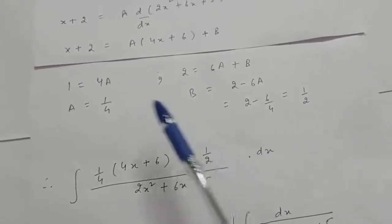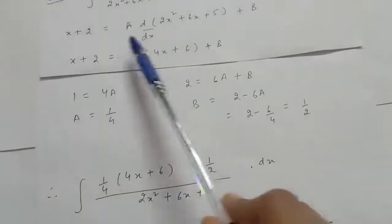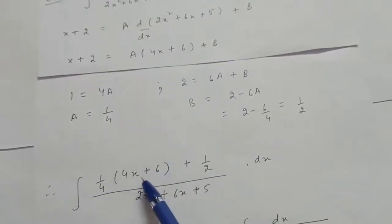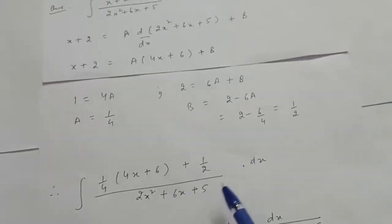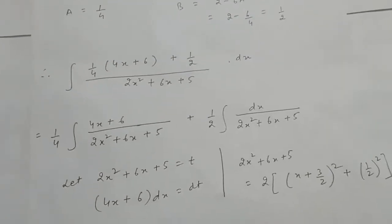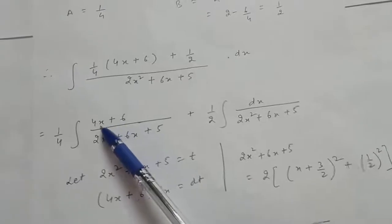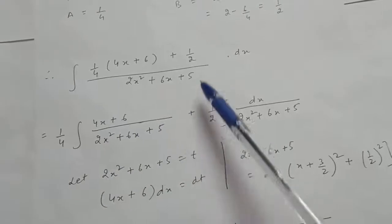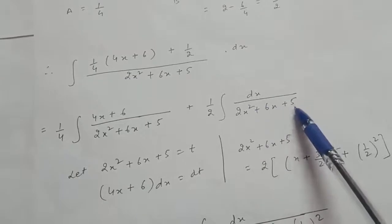With A equals 1/4 and B equals 1/2, replace x + 2 with (1/4)(4x + 6) + 1/2. The integral splits into (1/4) times integral of (4x + 6)/(2x² + 6x + 5) dx plus (1/2) times integral of 1/(2x² + 6x + 5) dx.